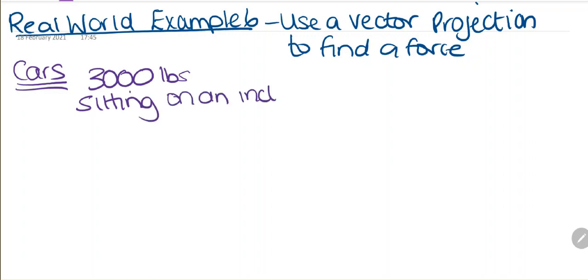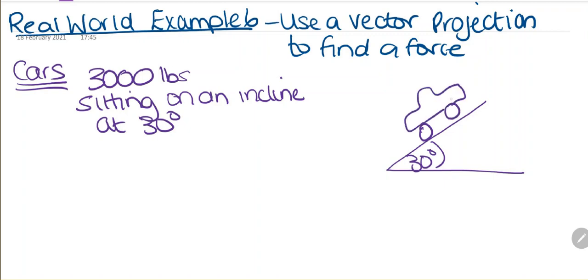An incline at 30 degrees. If we were to draw this, we have a hill with an angle of 30 degrees and a car sitting on it. We need to find the amount of force needed to push to stop this car from rolling down the hill.